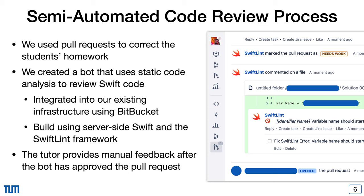To reduce the tutor's workload and provide a common baseline for all students, we used a semi-automated code review process. We developed a code review bot for the Swift programming language that enables static code analysis and is integrated into our existing infrastructure using Atlassian's Bitbucket platform. The bot uses the SwiftLint static code analysis framework and is a server application written in Swift. Students incorporate the feedback provided by the bot, and it may take multiple iterations until the pull request is approved. Once the bot approves the pull request, the tutor provides manual feedback on the code's overall architecture and structure.